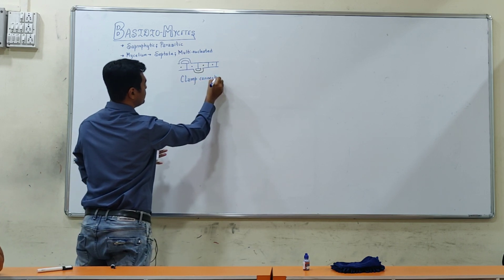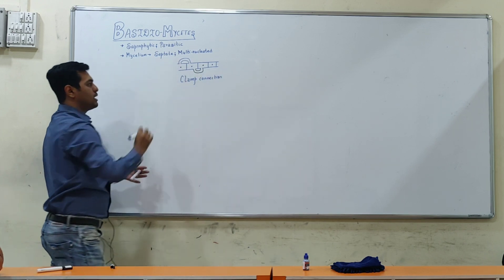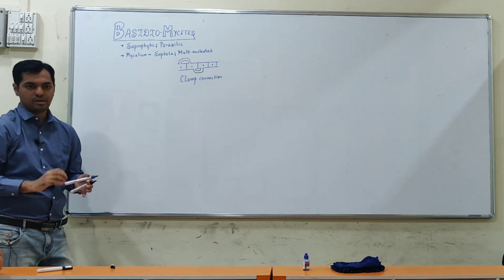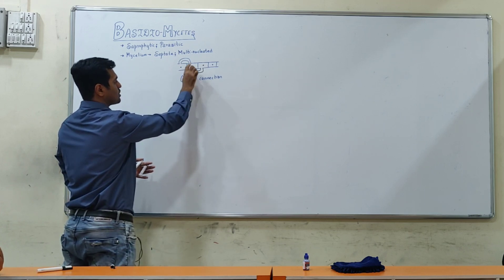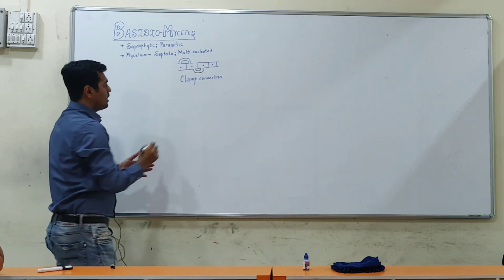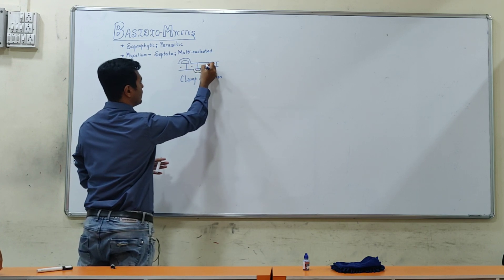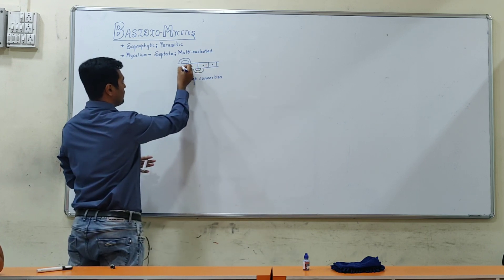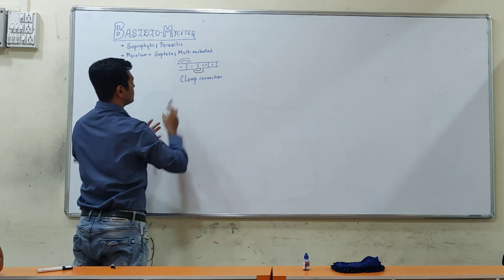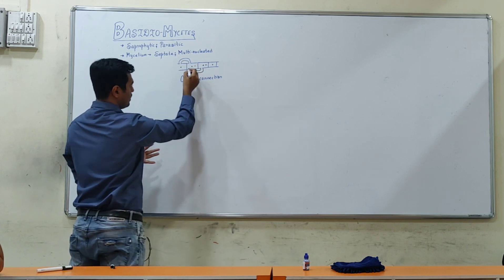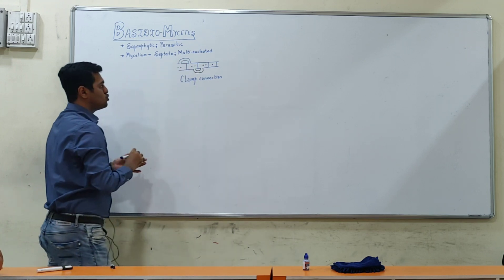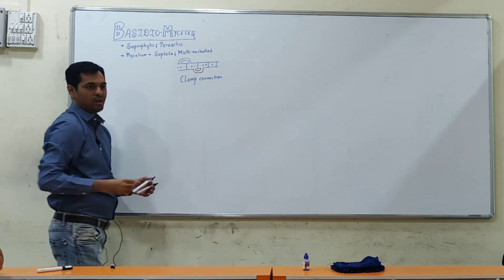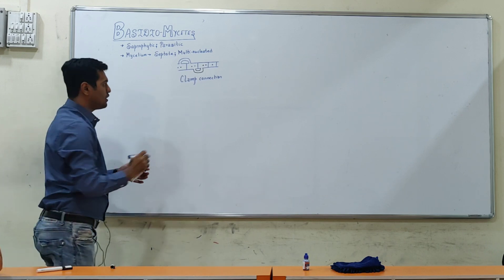So clamp connection is a unique feature which has been observed in Basidiomycetes members. Now in clamp connection what happens, this nucleus will make a copy and that nucleus will transfer to another cell. Same way here also such nucleus duplication will happen and that nucleus will transfer to the neighboring cell. Its nucleus will go here. So basically what is happening, the single nucleus mycelium.